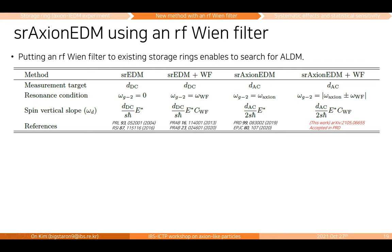The most interesting parameter point may be at axion mass of 10 to the minus 6 eV, but sensitivity significantly degrades over a wide mass range. Why? Because in the resonance condition, by tuning between G-minus-2 frequency and Wien filter frequency, the axion frequency can be made sufficiently small — but there is an upper limit. By cancellation we can make the required G-minus-2 frequency small, but we cannot increase it as much. To improve sensitivity, the straightforward way is to increase statistics or improve other parameters like spin coherence time.